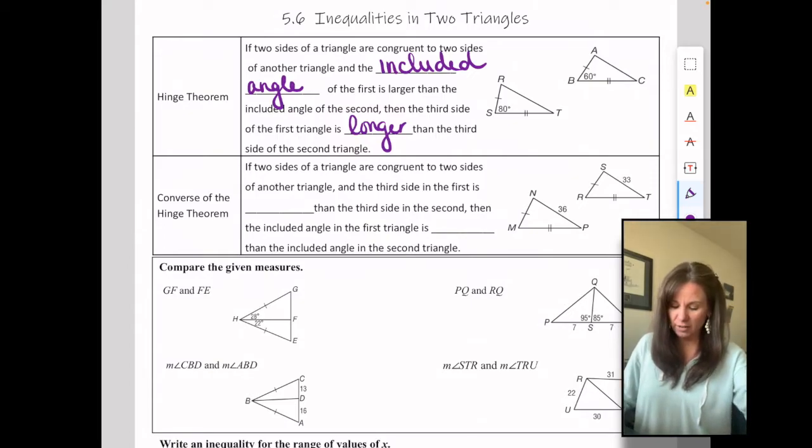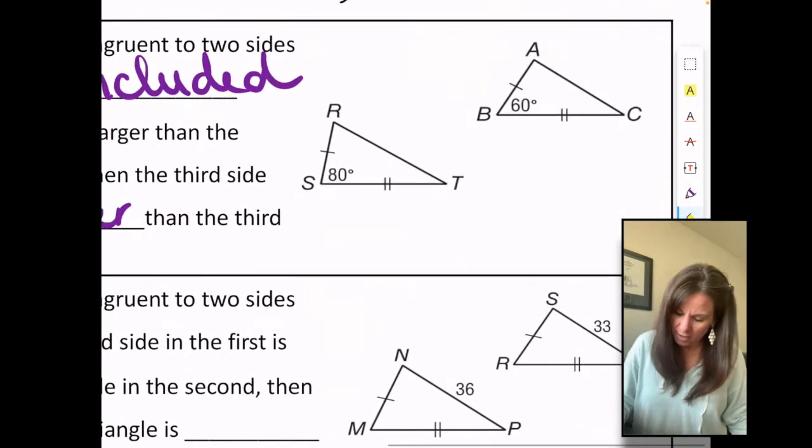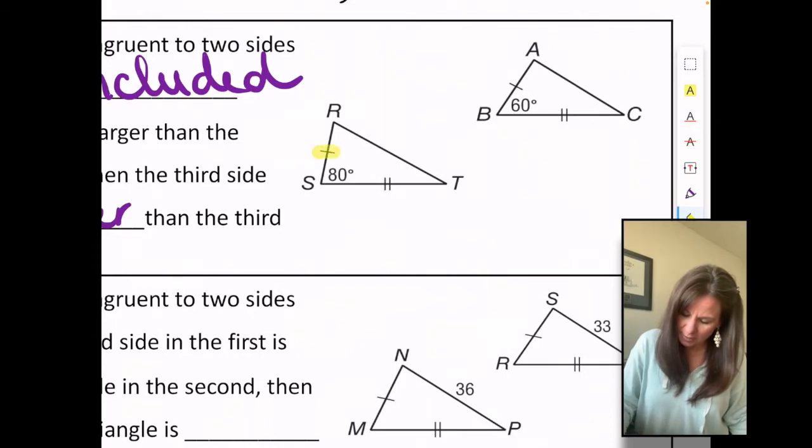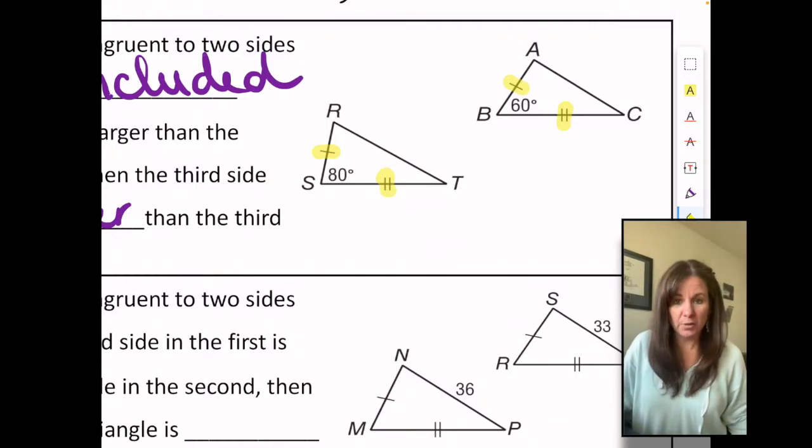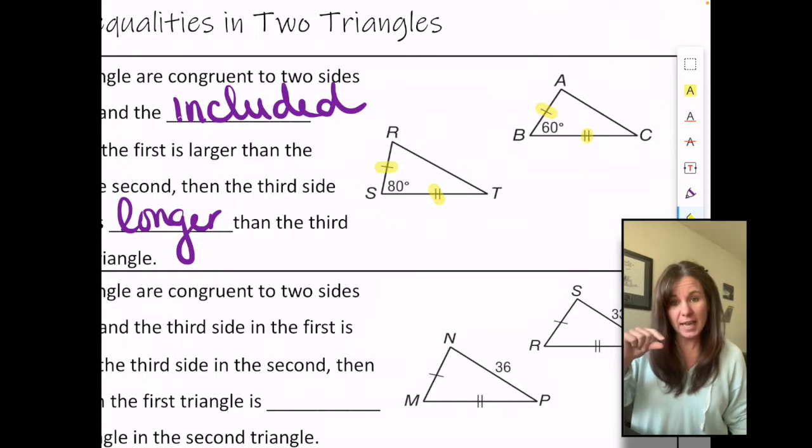So if two sides of a triangle are congruent to two sides of another triangle. We're looking at these two triangles here, RST and ABC, and we see we've got these lovely congruent markings. So those two sides are congruent, those corresponding sides are congruent. The thing that's different is the angle between them.